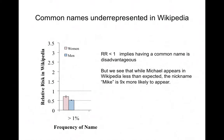Looking at names and birth locations, what we first see is that common names are underrepresented in Wikipedia. We're looking at names that are frequent at more than 1% in the population — common names like Michael and James. What you would expect is that if a common name makes no difference, the relative risk would equal 1. Instead, the relative risk is less than 1, which implies that having a common name is disadvantageous — you're less likely to appear in Wikipedia.